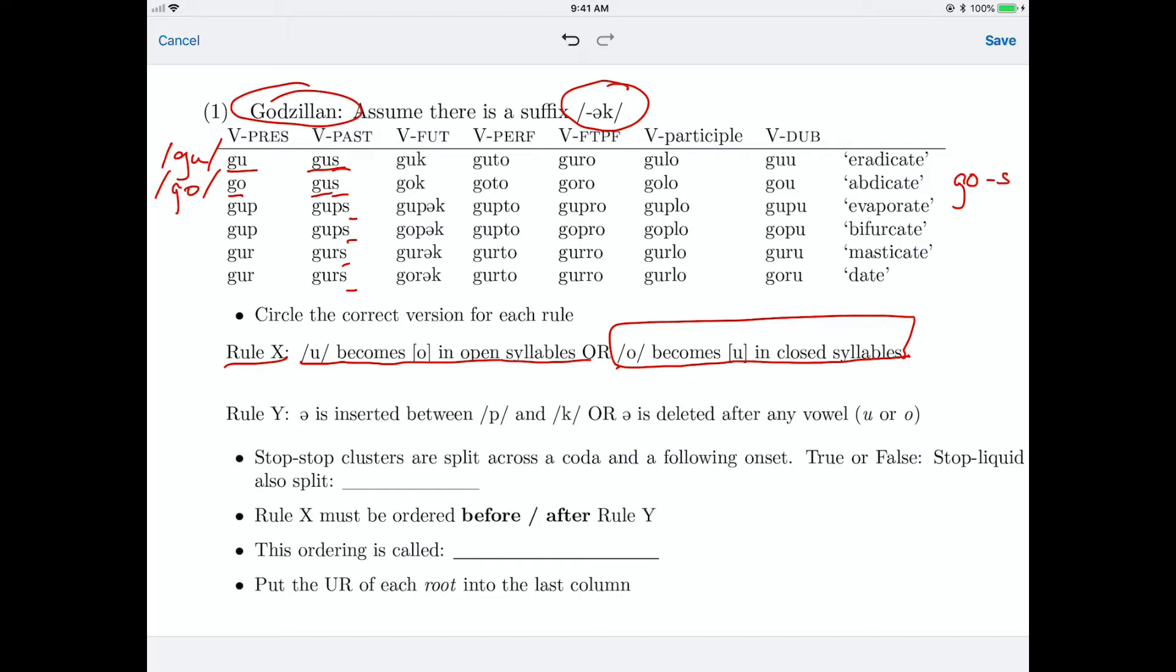The next question is, do we have a rule that inserts schwa between a p and a k, or is schwa deleted after any vowel, after an o or a u, let's say? And this is obvious because, remember, our instruction said that the underlying form of the suffix is schwa k. So if we sometimes have a schwa in the suffix and sometimes don't, well, either there's schwa insertion or deletion, but we're told it was there in the input, so it must be a schwa deletion rule.